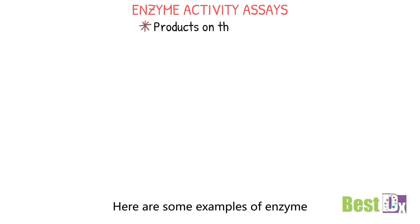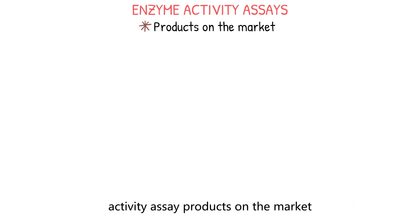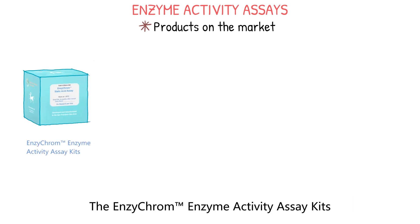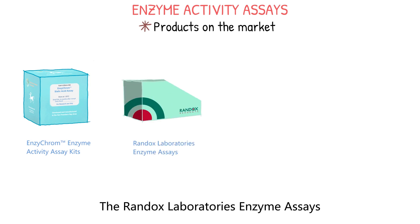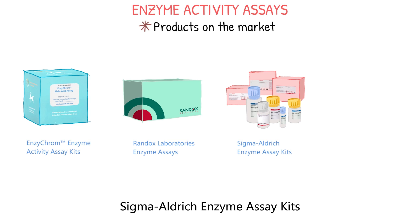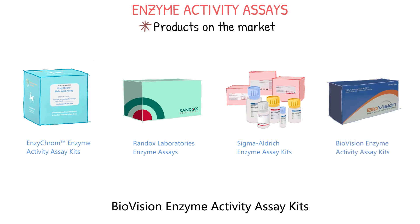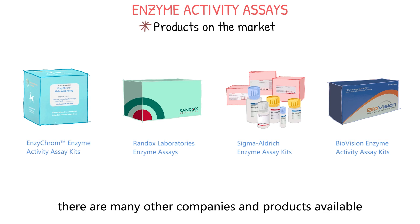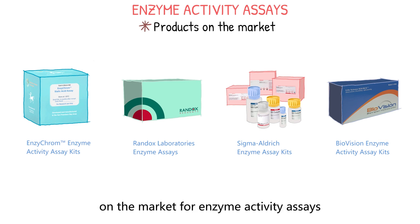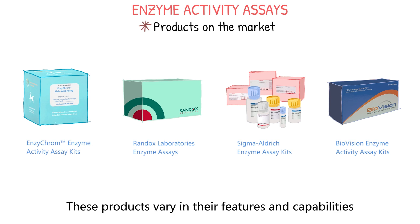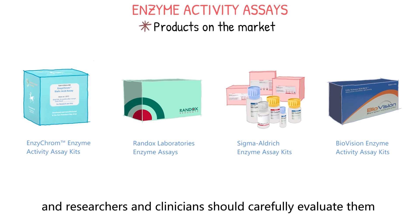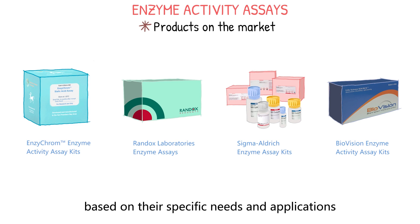Here are some examples of enzyme activity assay products on the market: the EasyChrome Enzyme Activity Assay Kit, Randox Laboratories Enzyme Assays, Sigma-Aldrich Enzyme Assay Kits, and BioVision Enzyme Activity Assay Kits. In addition to these examples, there are many other companies and products available on the market. These products vary in their features and capabilities, and researchers and clinicians should carefully evaluate them based on their specific needs and applications.